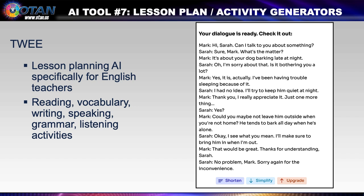This is the dialogue output it gave me. Mark: 'Hi, Sarah. Can I talk to you about something?' Sarah: 'Sure, Mark. What's the matter?' Mark: 'It's about your dog barking late at night.' Sarah: 'Oh, I'm sorry about that. Is it bothering you a lot?' Mark: 'Yes, it is actually. I've been having trouble sleeping because of it.' Sarah: 'I had no idea. I'll try to keep him quiet at night.' Mark: 'Thank you. I really appreciate it. Just one more thing.' Sarah: 'Yes?' Mark: 'Could you maybe not leave him outside when you're not at home? He tends to bark all day when he's alone.' Sarah: 'Okay, I see what you mean. I'll make sure to bring him in when I'm out.' Mark: 'That would be great. Thanks for understanding, Sarah.' Sarah: 'No problem, Mark. Sorry again for the inconvenience.' There was an option to also enter target vocabulary, and there are options to shorten or simplify the dialogue as well.